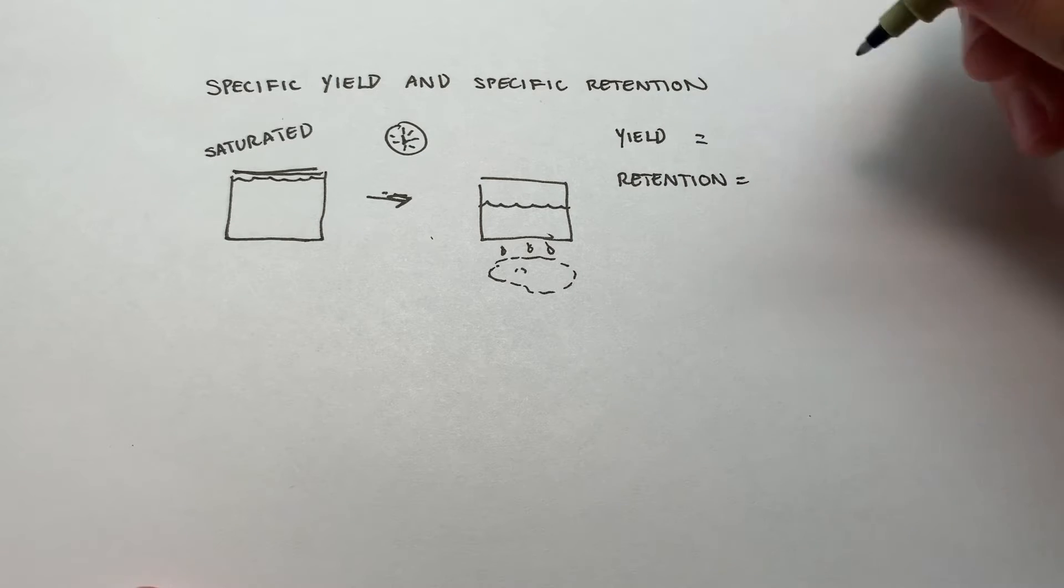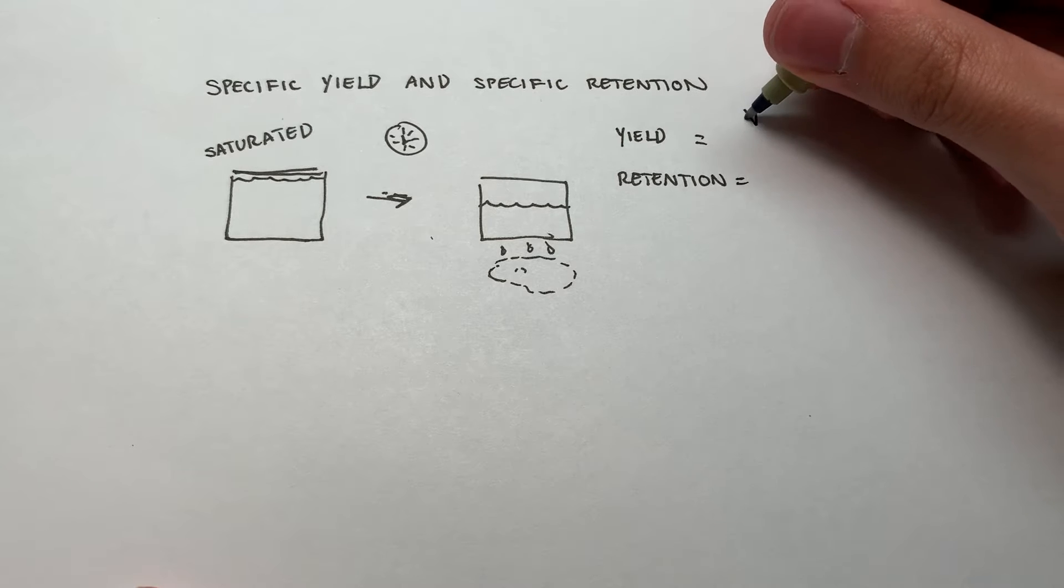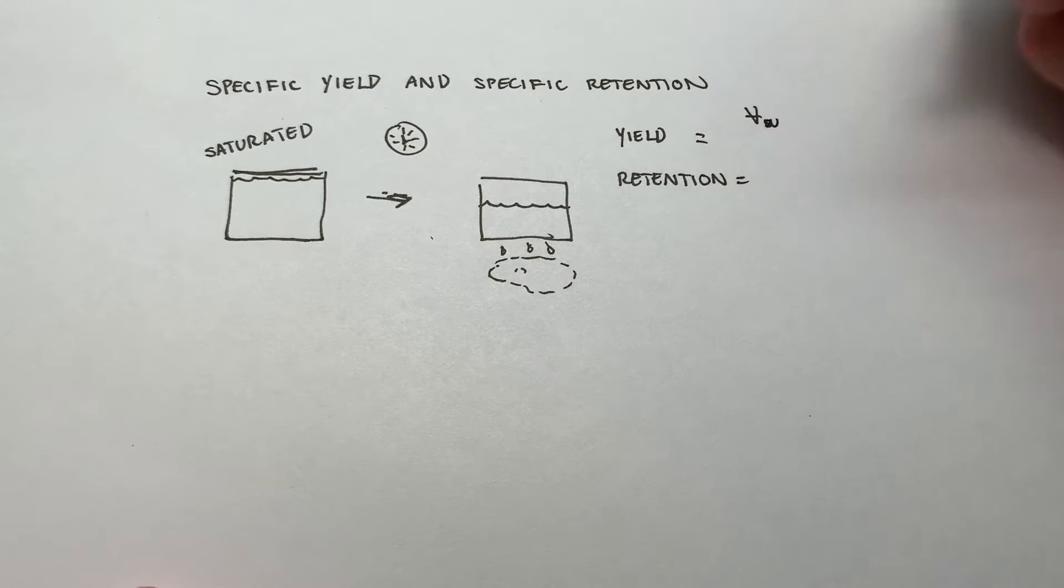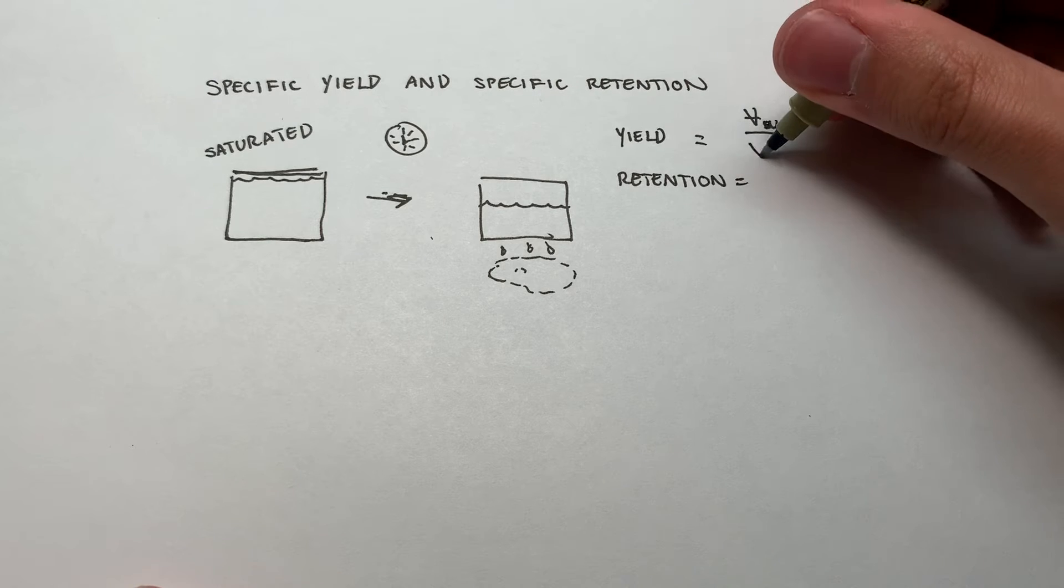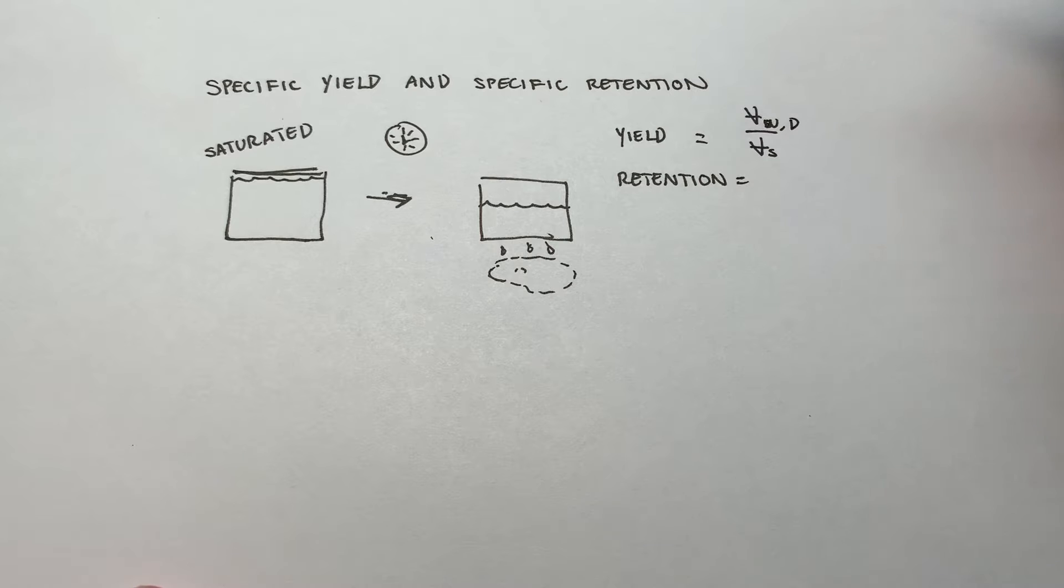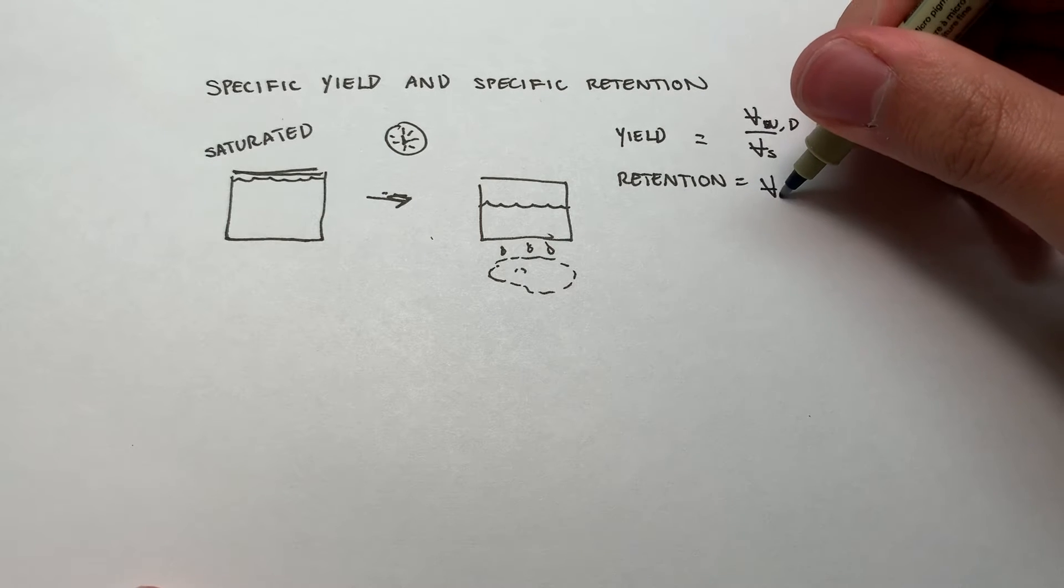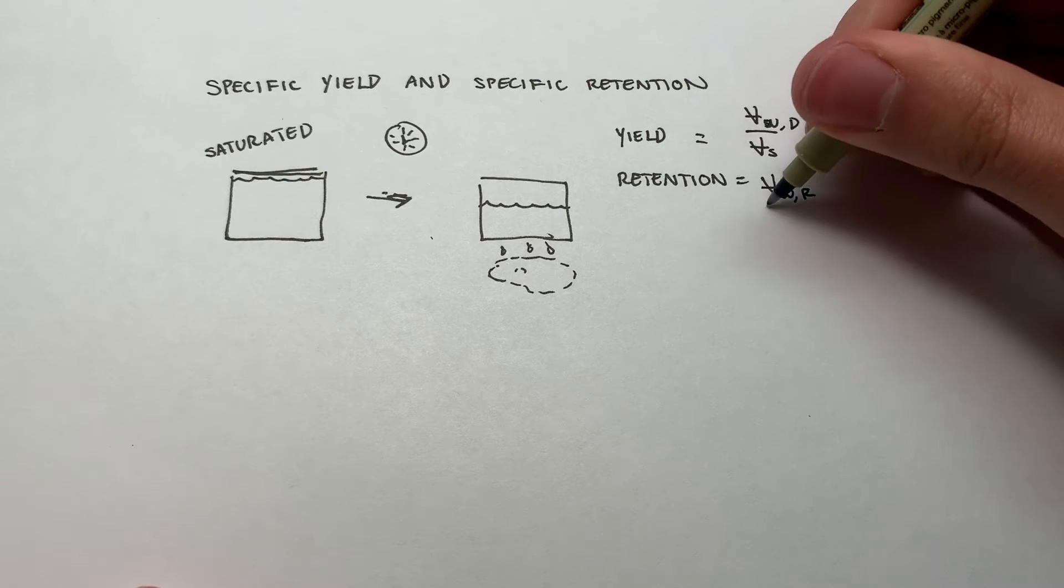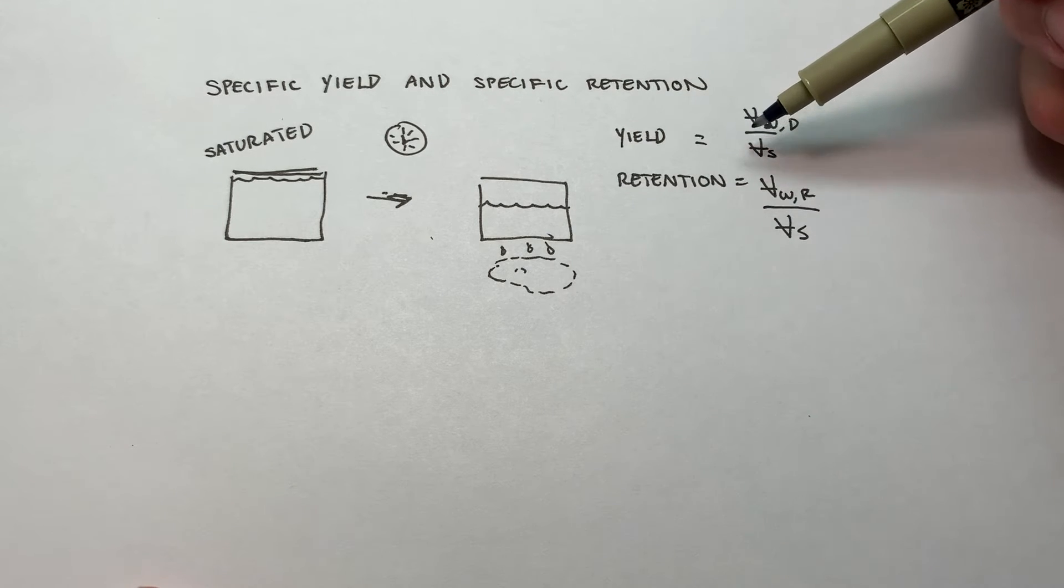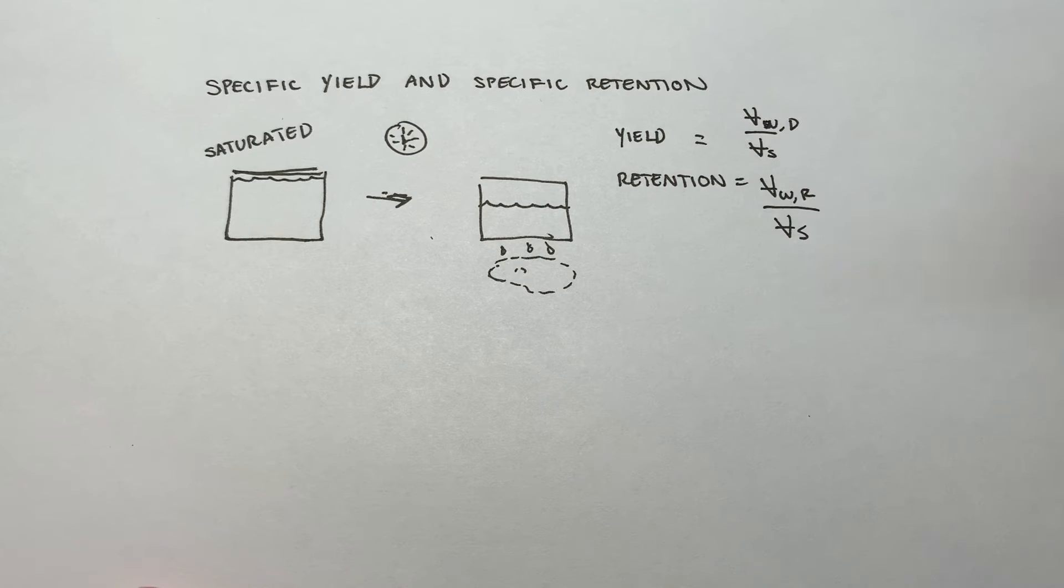Yield and retention is going to be, we can call this volume, let's say V sub W for water divided by V sub S sample, and I'll call that V sub water comma D for drained, and this will say retained divided by the volume of the sample. So very similar, we're just looking at the volume drained for yield, and think of that as the water that the sample is able to yield that we are able to get from it,